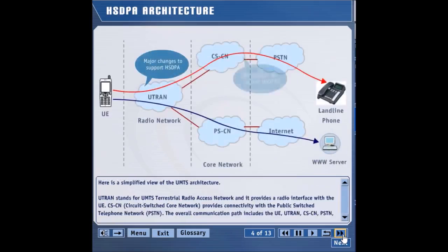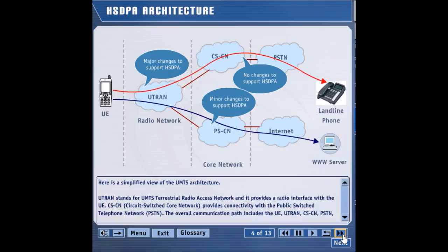HSDPA does not introduce any new network element to the UMTS Release 99 architecture. One of the main goals of HSDPA is to reuse the existing network. Since HSDPA is primarily a radio access solution, most of the changes are made in the UTRAN — in other words, the Node B and RNC require significant enhancements. The CSCN remains the same, and the PSCN undergoes minor changes to support and exploit higher data rates.